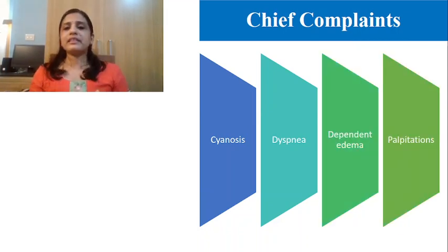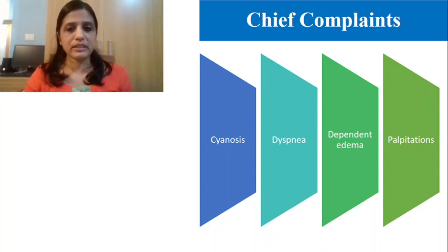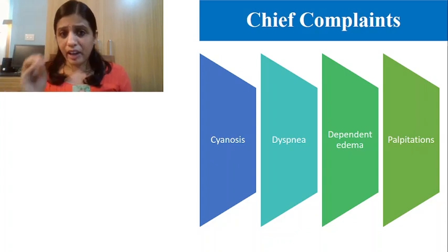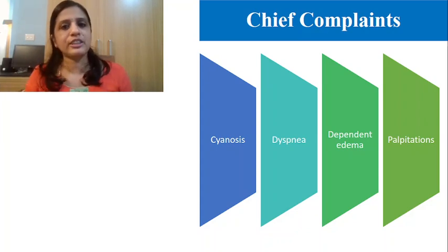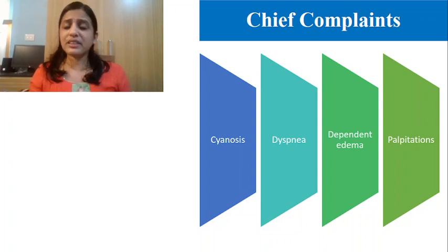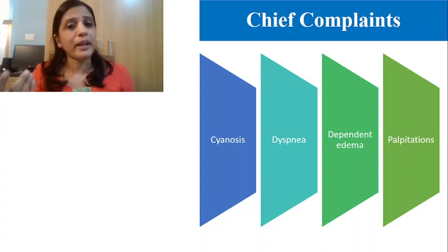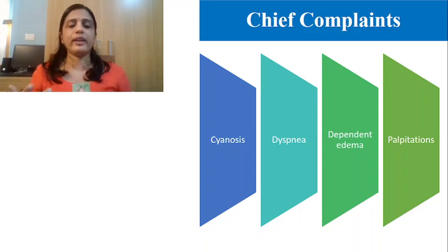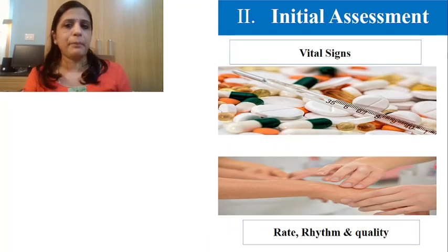The chief complaints represent what complaints the patient came to the cardiac unit with. You may have to describe whether the patient had breathing difficulty or chest pain, where exactly — retrosternal or substernal — mild, moderate, or severe dyspnea, whether there is dependent edema, and whether there is weight gain or weight loss. These are the usual things you write under chief complaints.